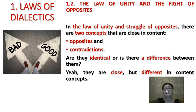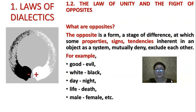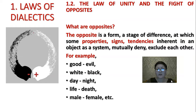In the law of unity and struggle of opposites, there are two concepts that are close in content: opposites and contradictions. Are they identical or is there a difference between them? They are close but different in content. The opposite is a form, a stage of difference at which some properties, signs, tendencies inherent in an object as a system mutually deny and exclude each other. For example: good and evil, white and black, day and night, life and death, male and female. The opposite is a quality of material things and phenomena to occupy extreme places in some system.